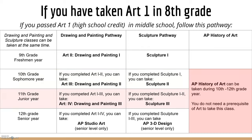Your junior year, if you've completed Art 1 through 3, you can take Art 4, Drawing and Painting 3, and if you completed Sculpture 1 through 2 you can take Sculpture 3. Your senior year you can dive straight into the AP classes. If you completed Art 1 through 4 you can take AP Studio Art, a senior-level-only class, and if you've completed Sculpture 1 through 3 you can take AP 3D Design. AP History of Art is also available.